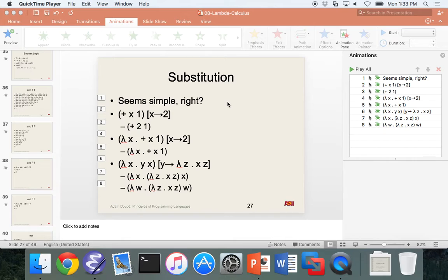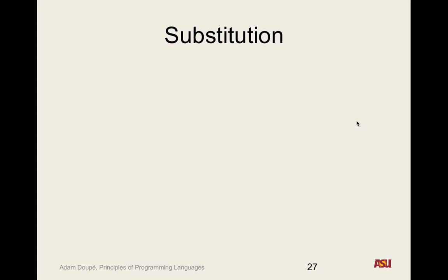Alright, so on we go. We've been building up everything we need to know to understand lambda calculus. We've talked about the syntax — what do lambda expressions look like — the four different forms a lambda expression could be in, and then we started talking about semantics and building up operators. We left Wednesday with substitution.